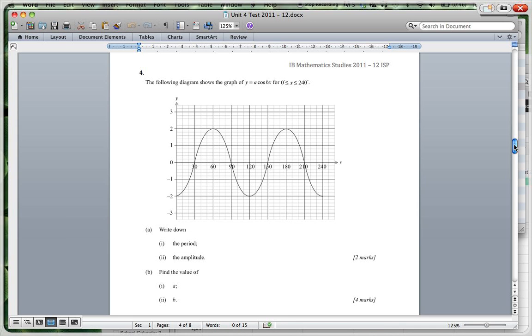The period, time for one complete cycle. So you can just draw in one complete cycle, that's up to there, 120. After that it starts repeating itself. So that's 120 degrees. The amplitude is from the middle of the graph to the maximum point there. So that's going to be, for this one, 2.